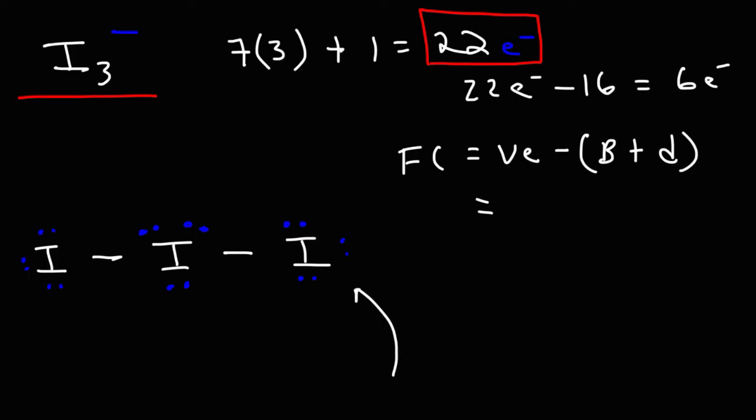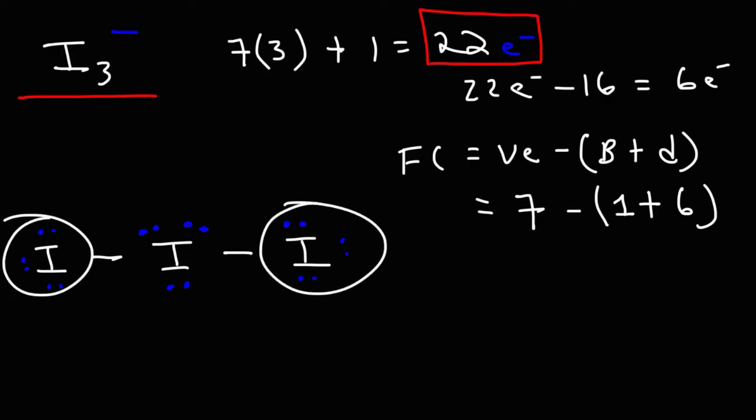So let's start with the element on the right. Iodine has 7 valence electrons. It has 1 bond and 3 lone pairs, which is 6 dots. So 7 minus 7 is 0. So both of these iodine atoms are neutral because they have the same situation.